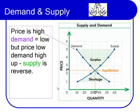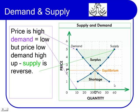When the price is high up here, then demand is not so great. But if the price goes down, then demand goes up. On the other hand, when the supply price is low, the supplier isn't willing to supply it. But when the price goes up, the supplier is happy to supply it.